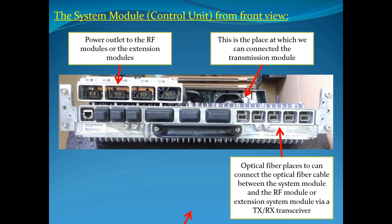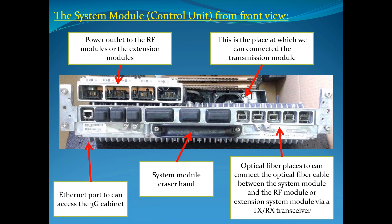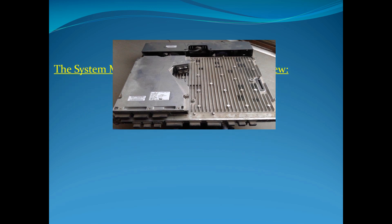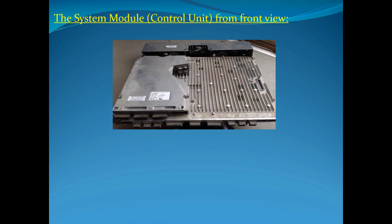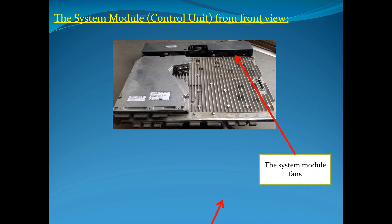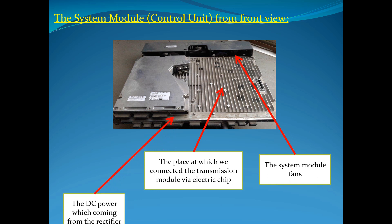Ethernet Port to access the 3G Cabinet. The System Module — Control Unit from Front View. The System Module Fans. The place at which we connect the Transmission Module via Electric Ship. The DC Power coming from the Rectifier.